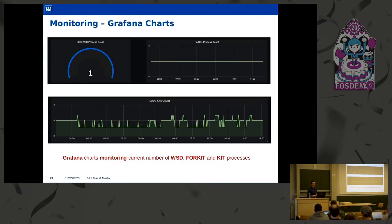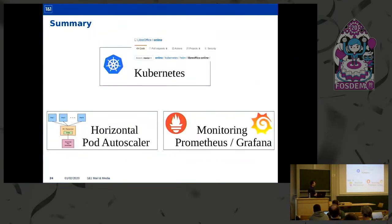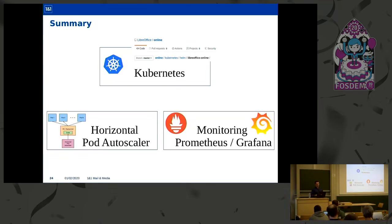Grafana offers many features for constructing dashboards, and it only depends on what metrics are returned from the getmetrics REST endpoint. We can also define alerts in Grafana — for example, alerting when there are two lool master process instances on a container. To summarize this section: you can deploy LibreOffice Online in Kubernetes using the official Helm chart; you can leverage the horizontal pod autoscaler to scale instances based on CPU, memory, or number of active documents; and you can monitor all instances using Prometheus, Grafana, and the metrics REST endpoint.